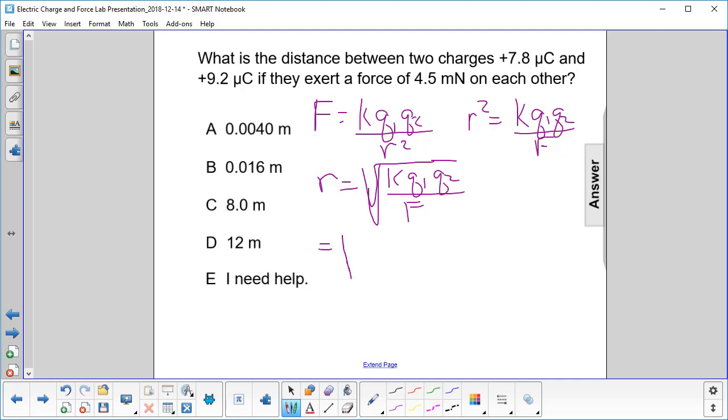So now you plug in the numbers. k is 9 times 10 to the ninth. I'm going to leave the units out here because we'll trust that they're right. They're newton meters squared per coulomb squared.